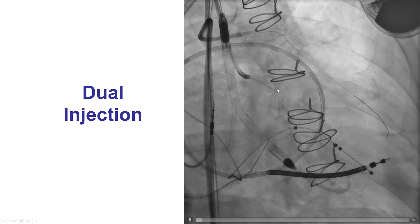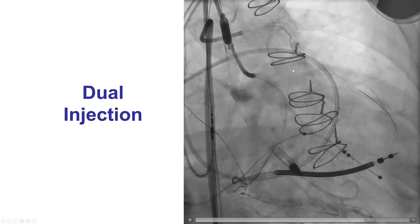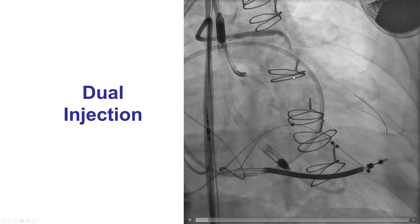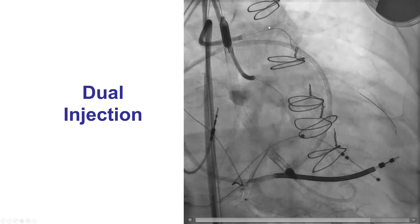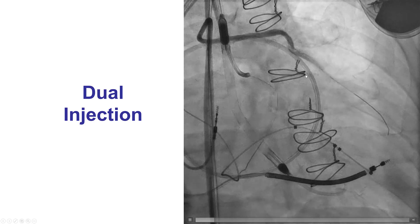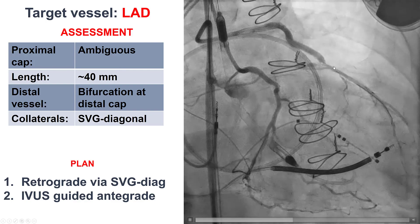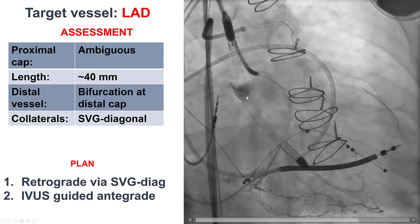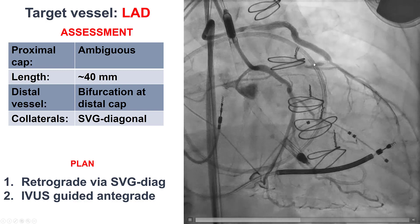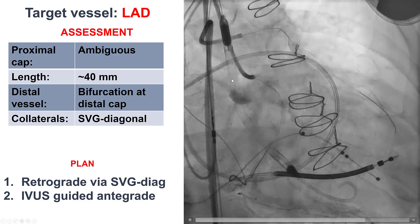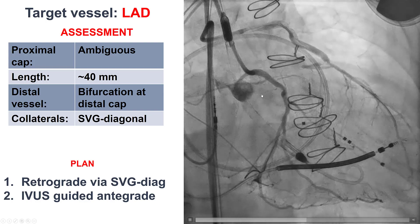This is the dual injection. We have a CTO of the LAD with an ambiguous proximal cap, length of about 40 millimeters, and a bifurcation at the distal cap. There is a bypass graft supplying the vessel distally. Given the proximal cap ambiguity and the presence of the SVG, we decided the best approach would be to go retrograde through the SVG diagonal, and as a backup, try antegrade with IVUS-guided puncture of the proximal cap.